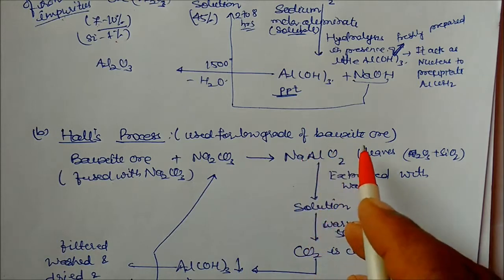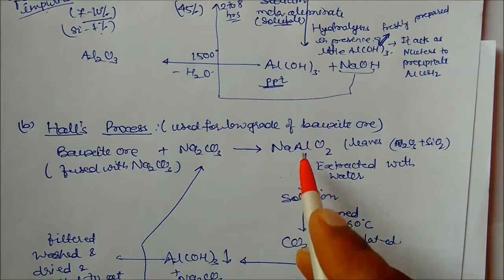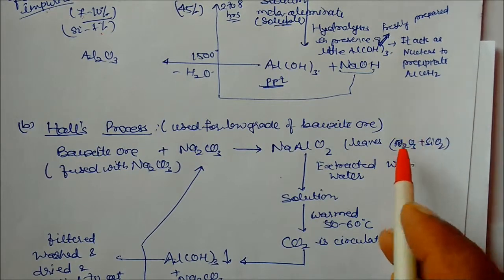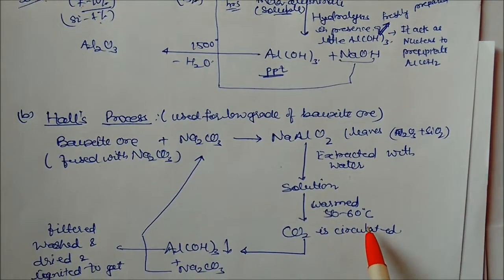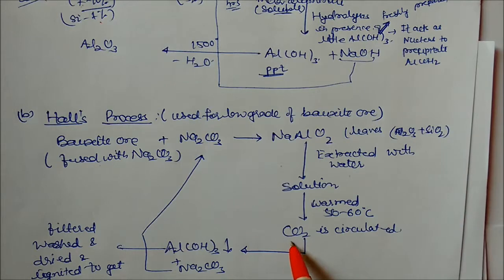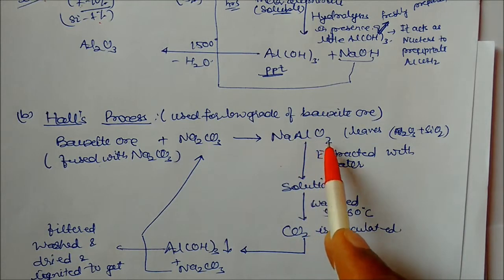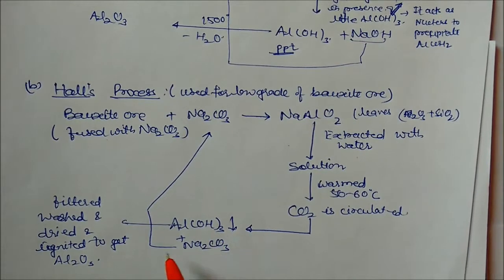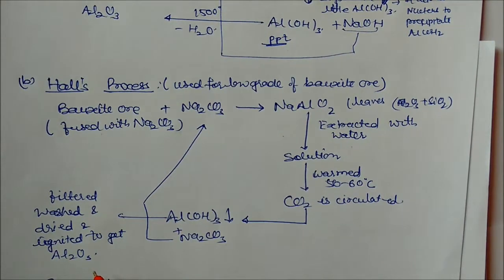Another process is Hall's process, used for low-grade bauxite ores. Bauxite is fused with sodium carbonate to form sodium aluminate. Iron oxides and silicon oxides are left behind. The sodium aluminate is extracted with water to make a solution, which is heated to 50 to 60 degrees centigrade and CO2 is passed through. CO2 reacts with NaAlO2 to form sodium carbonate and aluminium hydroxide precipitate.